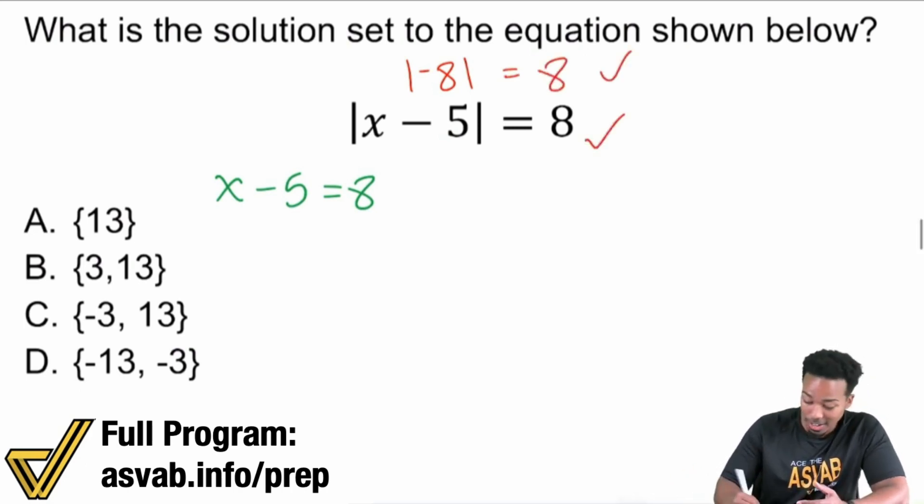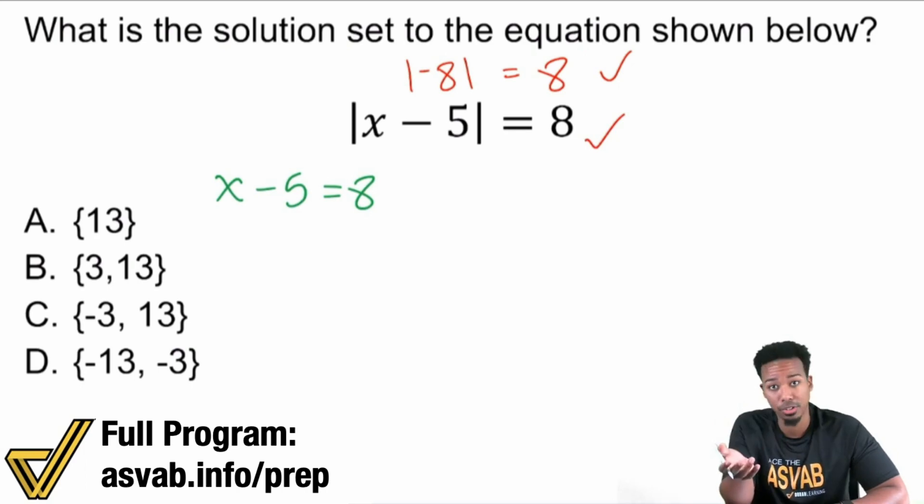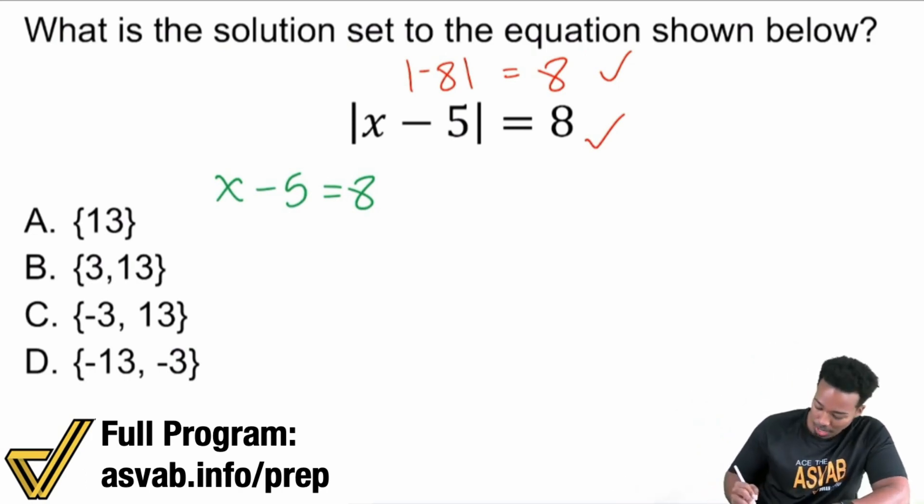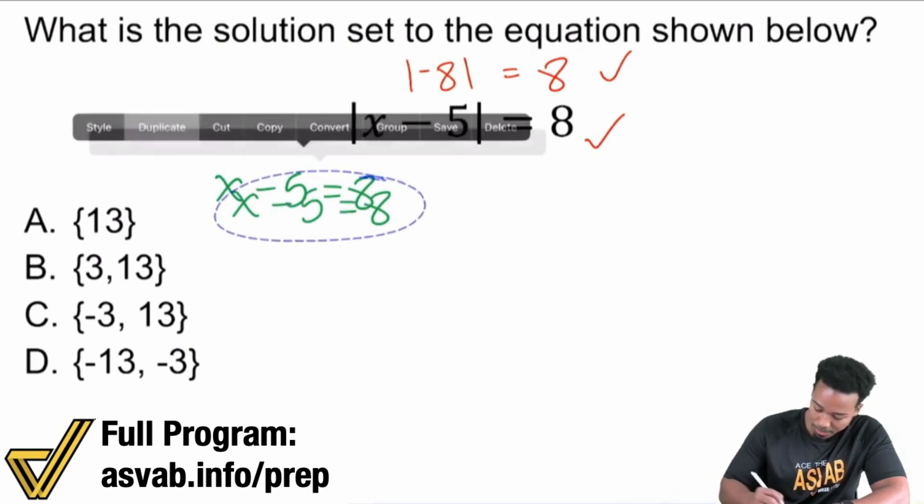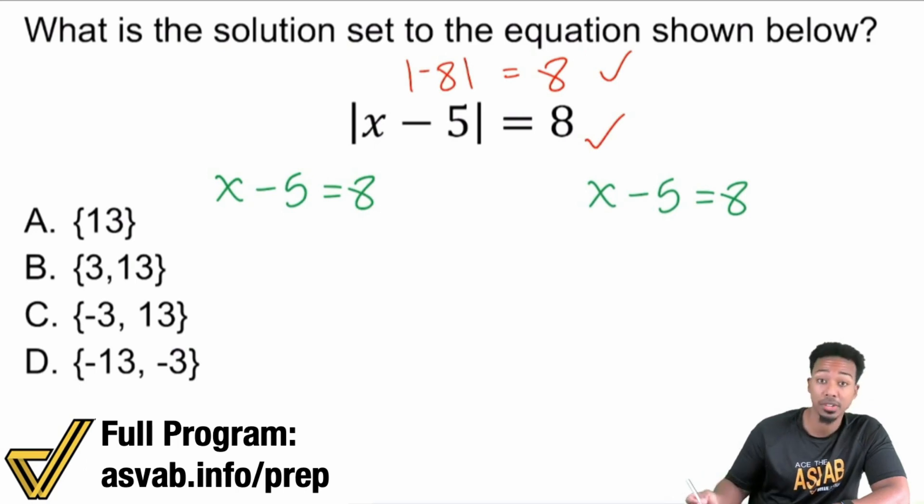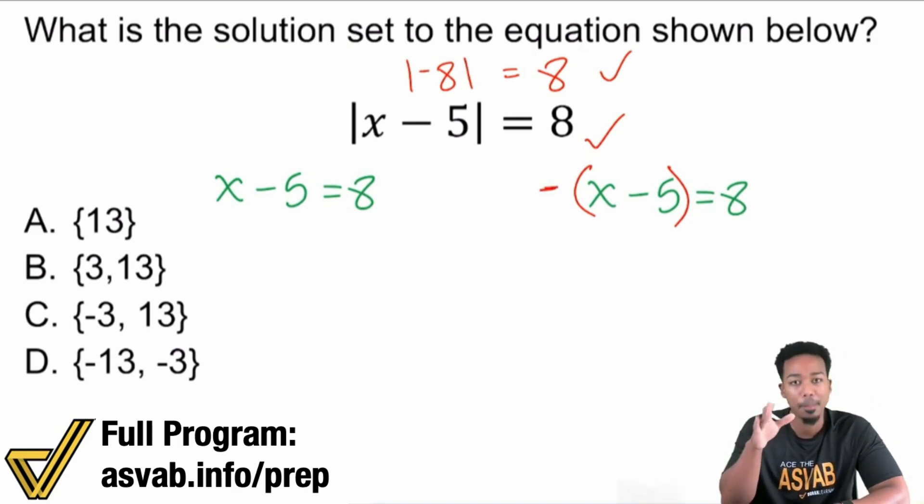So what you have to consider here is the positive version of the absolute value and the negative version, because considering both, they will both get you to that positive 8 or the number that you see on the other side. And so with that said, what we're going to have to do as well is do this. I'm going to go ahead and just copy this, put it over here. But again, we got to consider the negative. And the way that you consider the negative is by basically making the entire side that had the absolute value, make it negative. That's how you'll get it done.